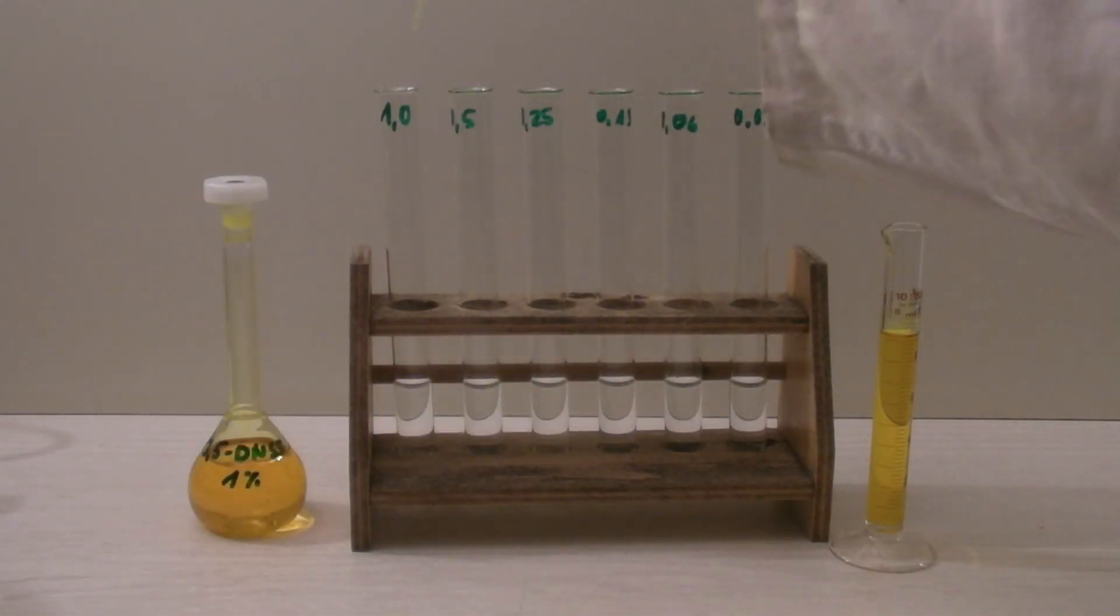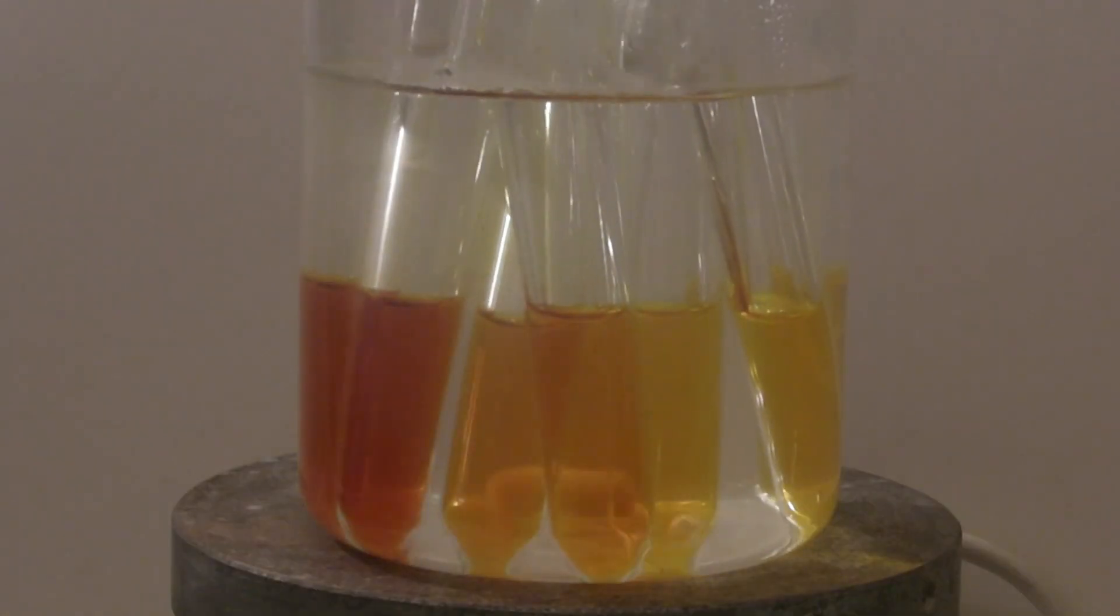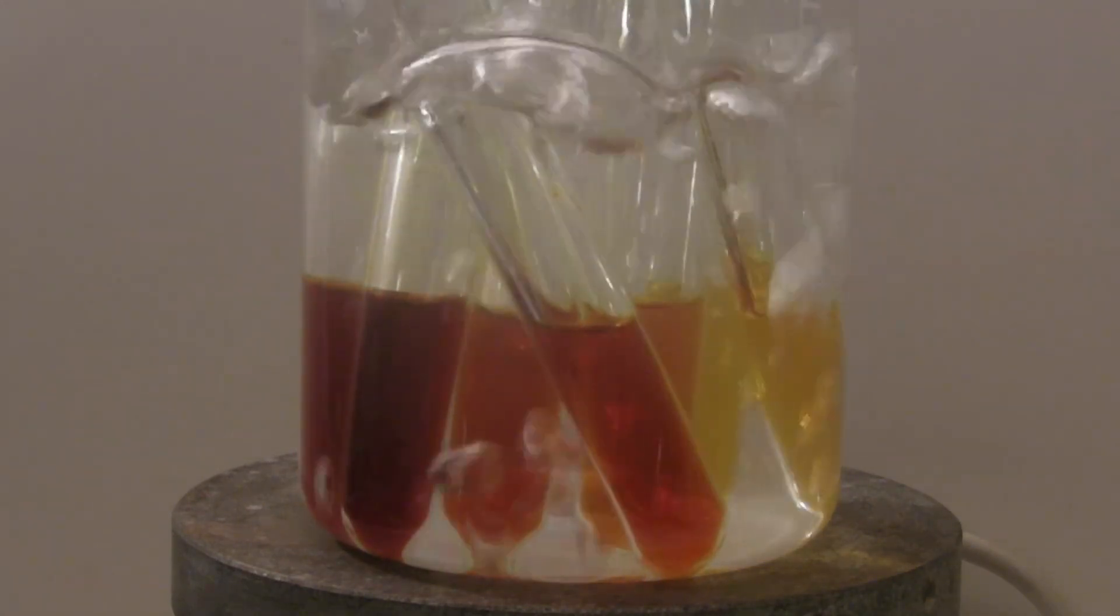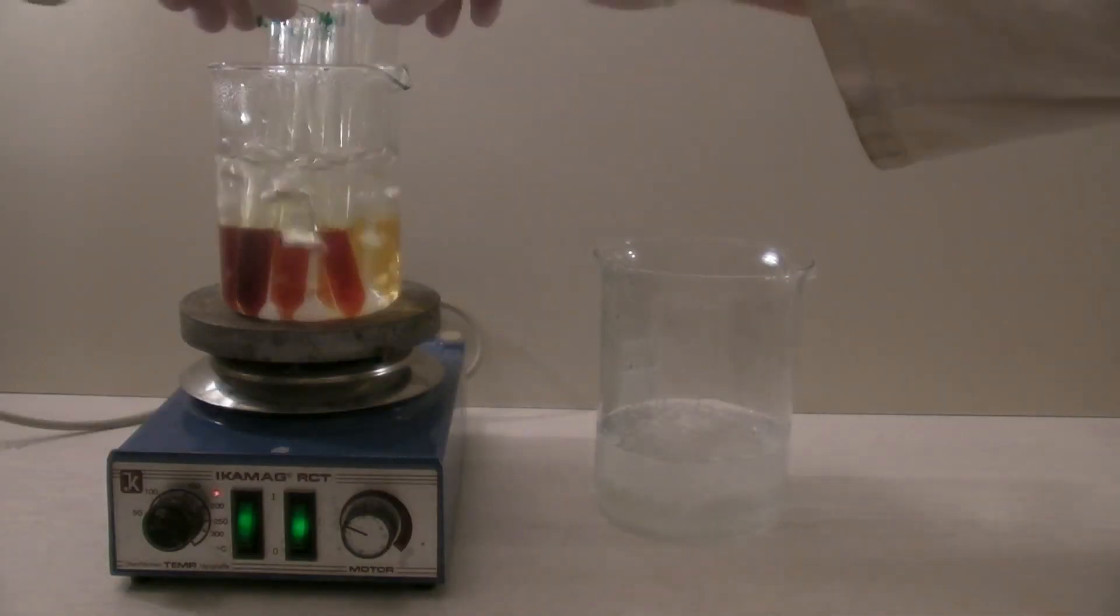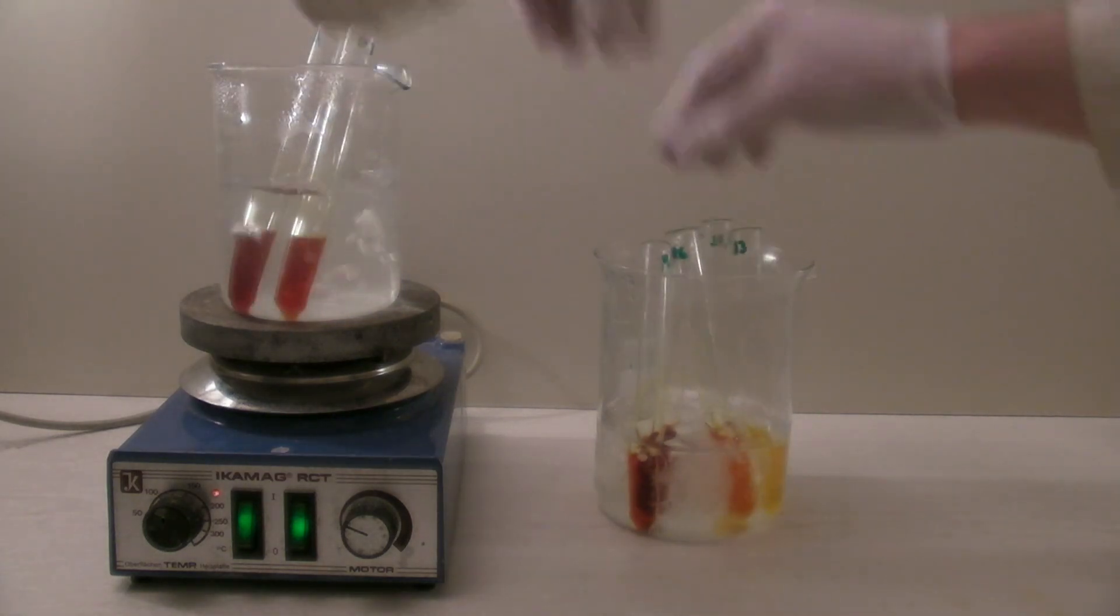Next, a dilution series with glucose was prepared, where the concentration was decreased to half of the amount in every new sample, beginning at 1%. In the quantitative detection, the samples are cooled with ice after the heating to prevent further reaction.